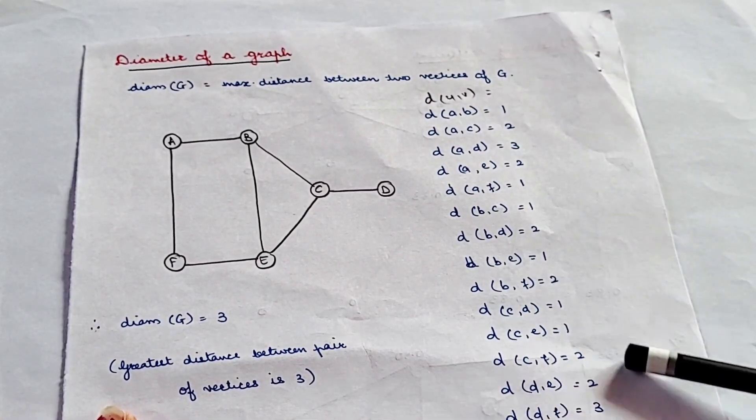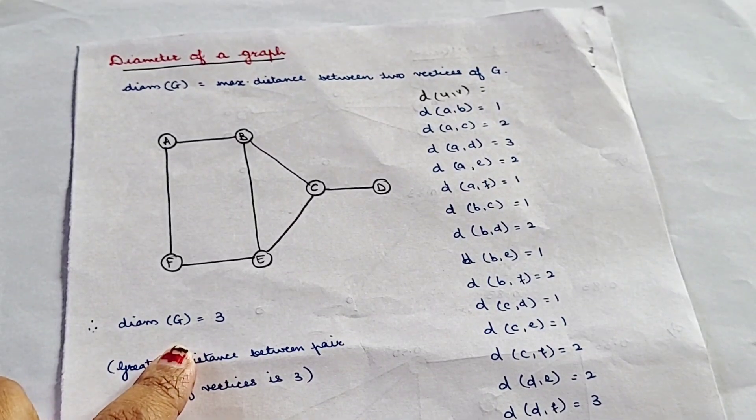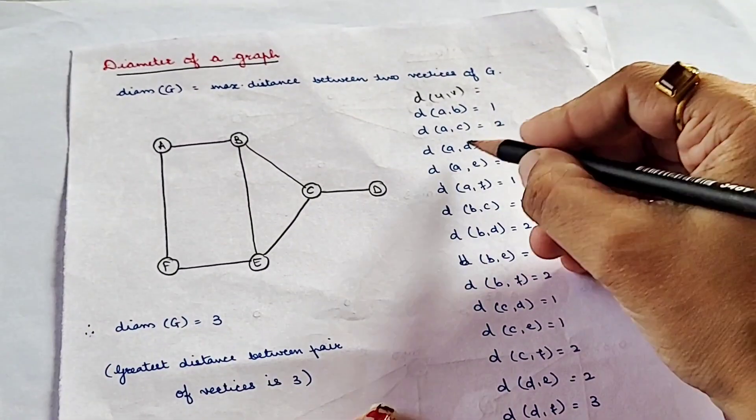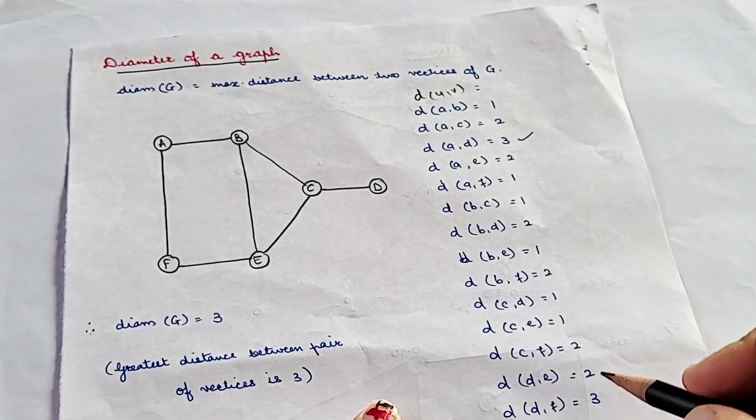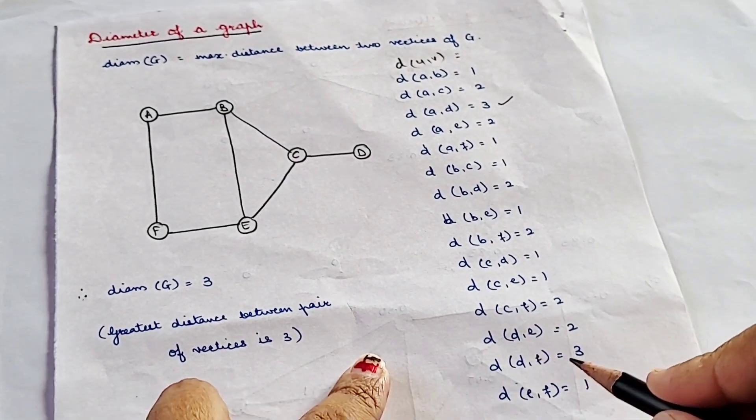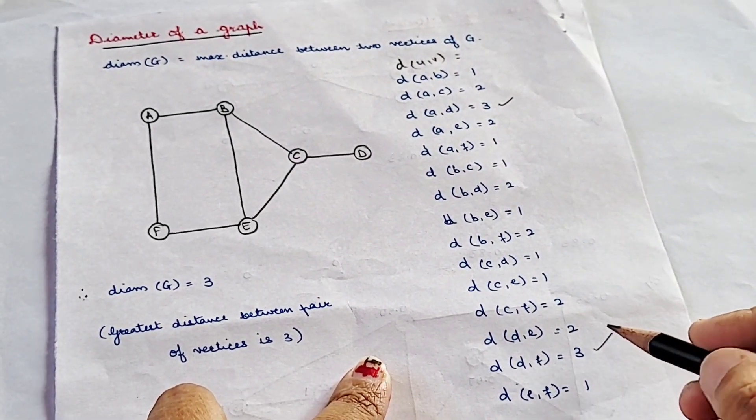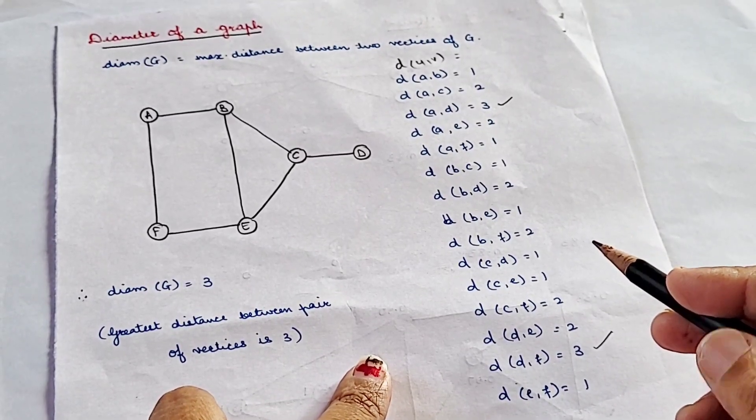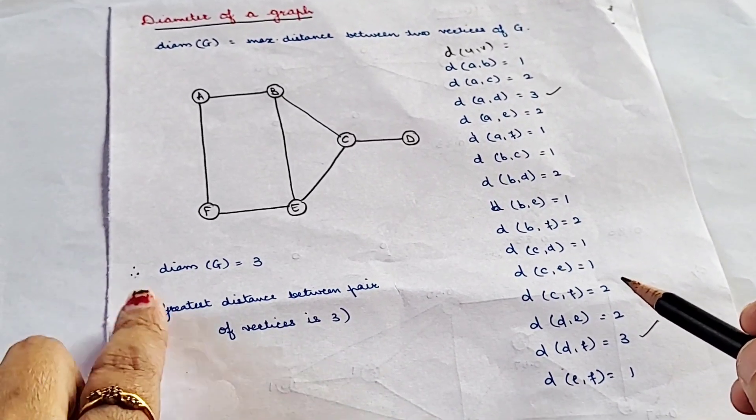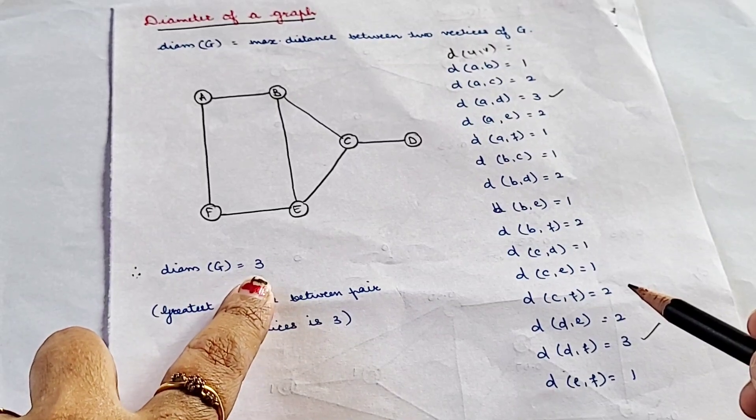So here we have for path A to D, three as the length. For path D to F, again three. So maximum distance between two vertices is three. Therefore, diameter of a graph is equal to three.